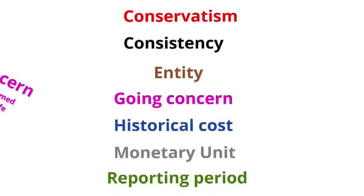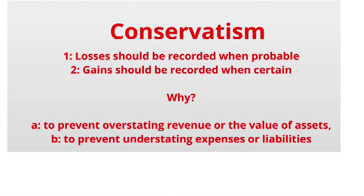There are seven principles you need to know, starting with conservatism, which has two aspects. First, we record a loss as soon as it's deemed probable, and we don't record a gain until it's deemed certain — i.e., a sale being made. This prevents us overstating revenue or the value of our assets, or understating expenses in the income statement or the liabilities.